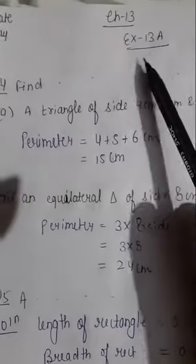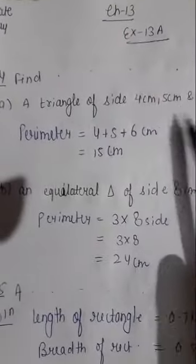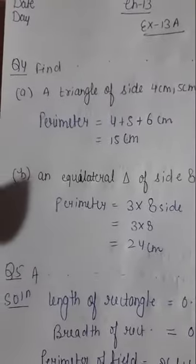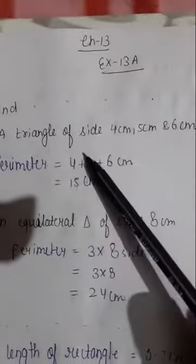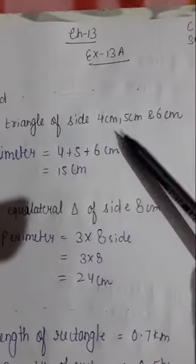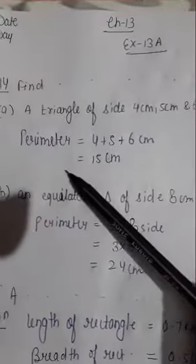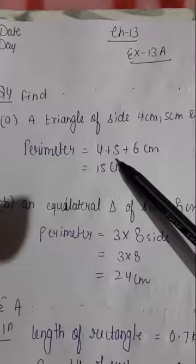Morning class, today is your math class, Chapter 13, Exercise 13A, Question Number 4. Find the perimeter of each of the following shapes. First is a triangle of side 4, 5, and 6 centimeter. To find perimeter: